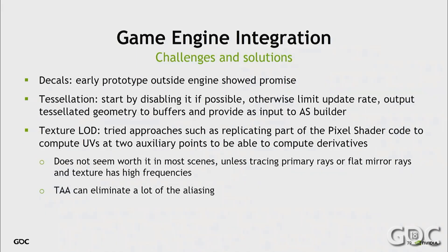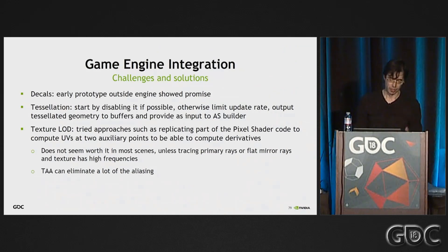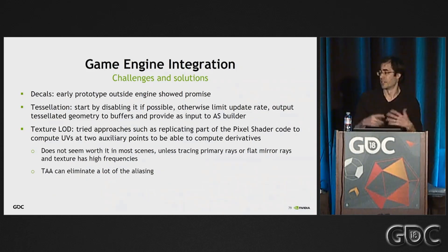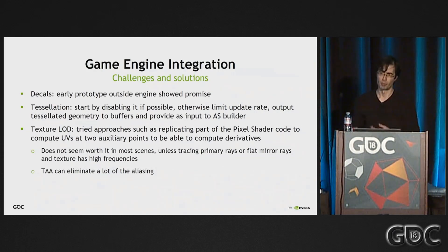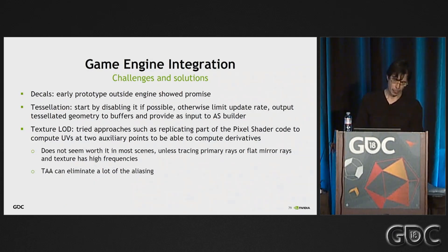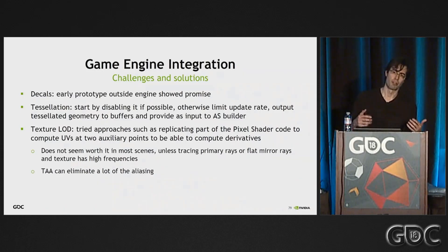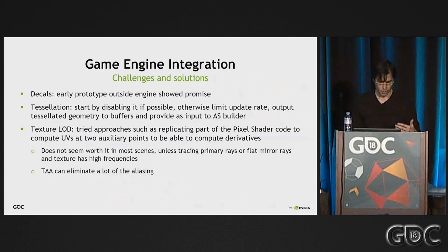There are a few challenges that we haven't fully tackled yet, but we believe there are solutions for them. One is decals — we have a prototype outside of the engine that is very promising, and we'd like to integrate that eventually. Tessellation is disabled in our current prototype; it requires streaming out or writing out the output of the tessellator into a memory buffer we can provide to the acceleration structure builder as input, and will probably require a lower update rate than the tessellation pipeline handles today in raster. And finally, texture LOD, which is really important if you're tracing primary rays where it's very visible if you don't use proper texture LOD — but it's not as critical for glossy reflections, shadows, or AO. We've experimented with a few approaches, but there is definitely a lot of ideas to make that better and faster.